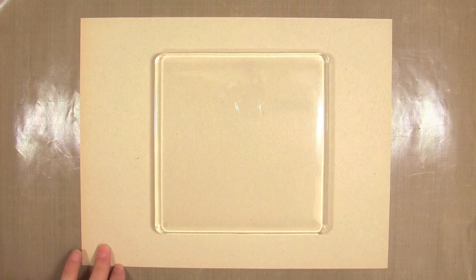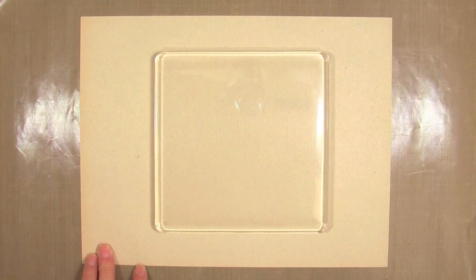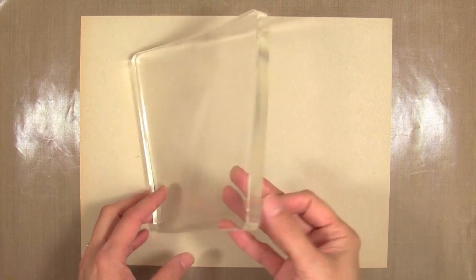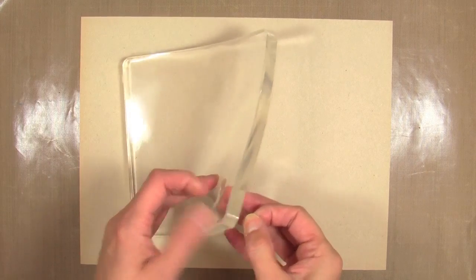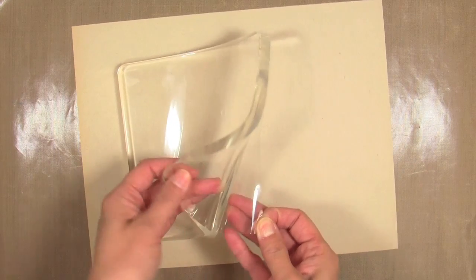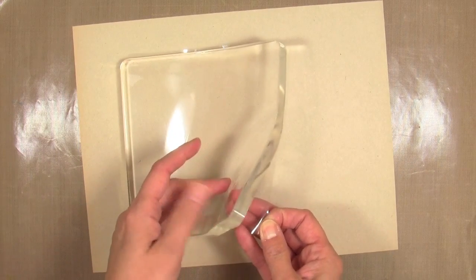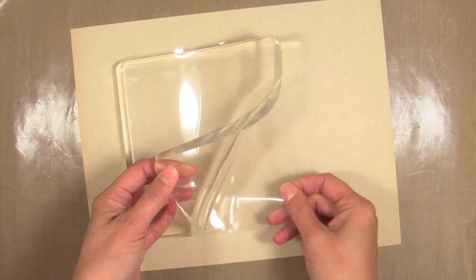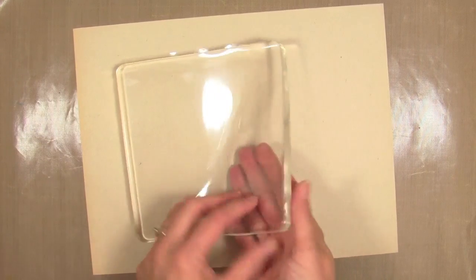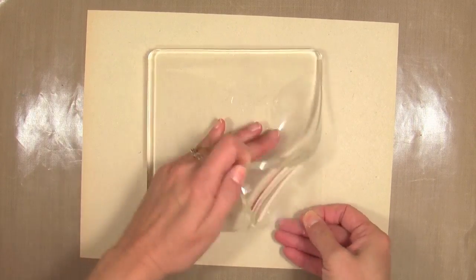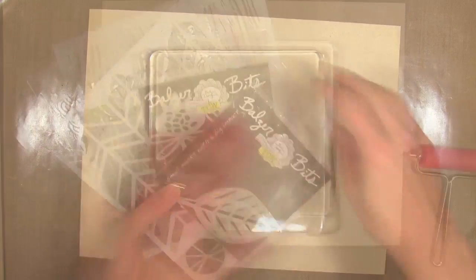This plate is a lot like finger Jell-O. My mom used to make it all the time as a kid. It's very thick and soft with a great surface and it's very flexible. You don't want to use anything sharp on this. You want to keep it on a non-porous surface, so I kept that acetate sheet on the back.